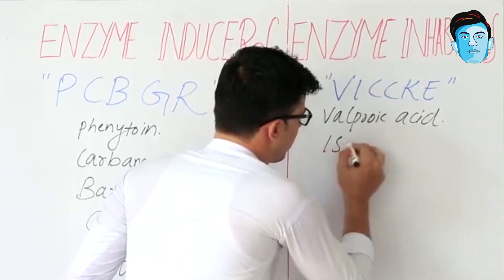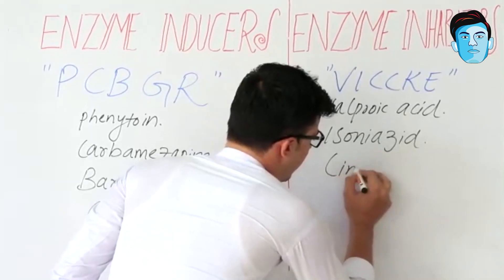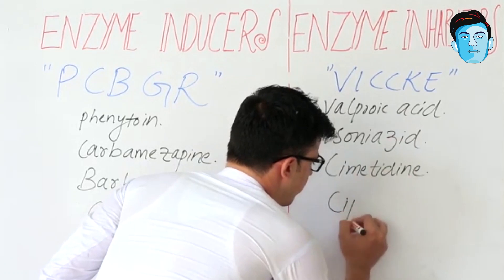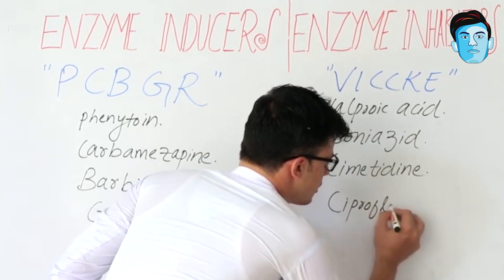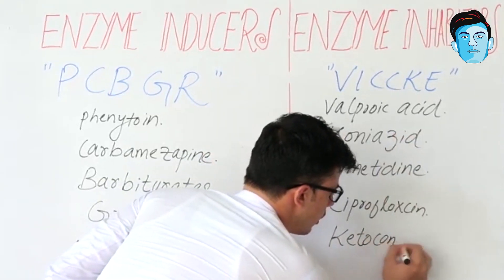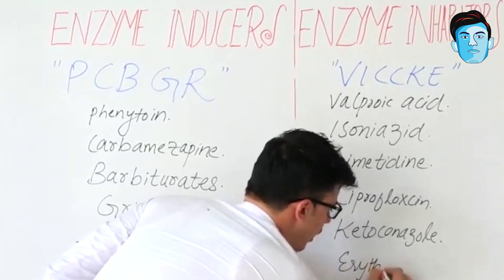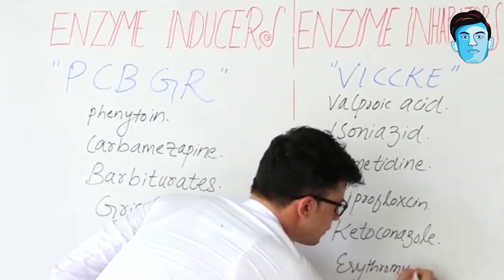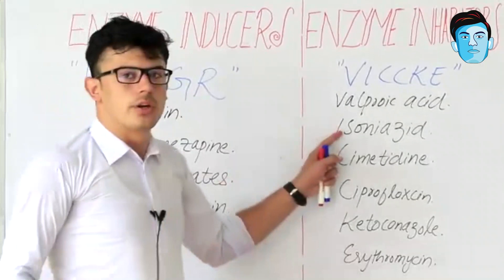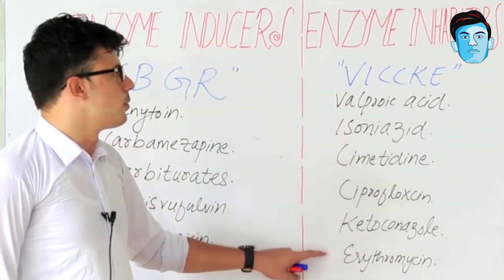I stands for Isoniazid, C stands for Cimetidine, another C stands for Ciprofloxacin, K stands for Ketoconazole, and E stands for Erythromycin. So the enzyme inhibitors are Valproic acid, Isoniazid, Cimetidine, Ciprofloxacin, Ketoconazole, and Erythromycin.